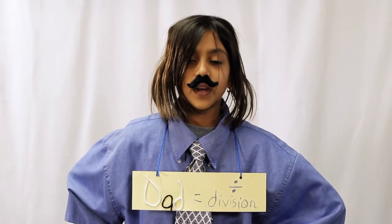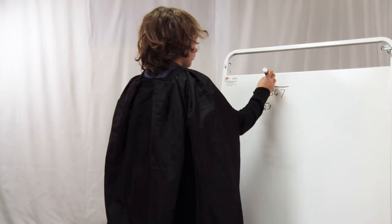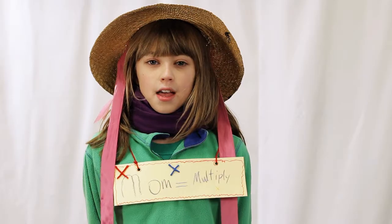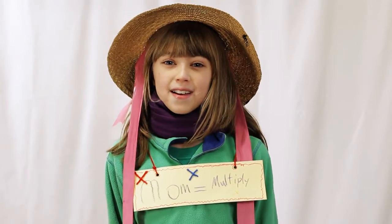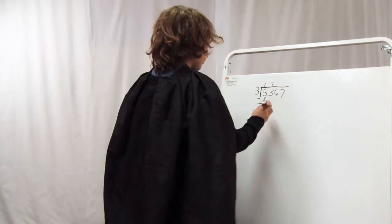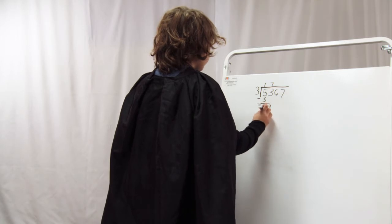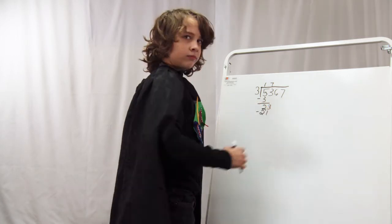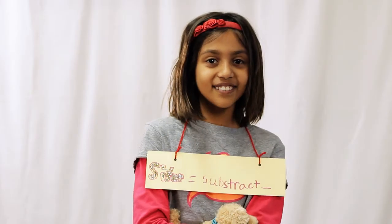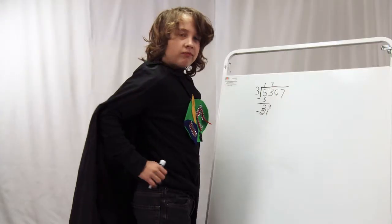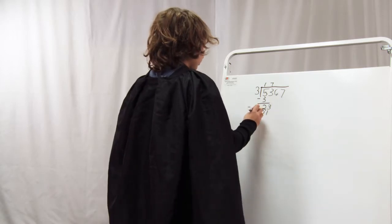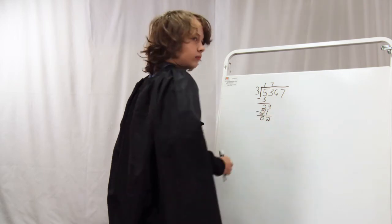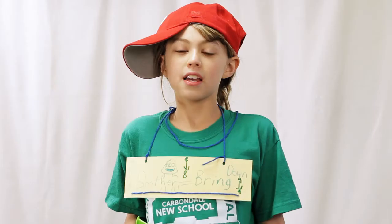First we divide! Three goes into twenty-three seven times. Now we multiply! Three times seven is twenty-one. Now we subtract! Twenty-three minus twenty-one is two.